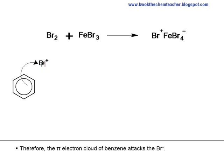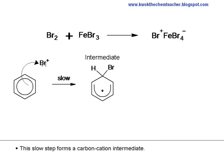Therefore, the pi electron cloud of benzene attacks the Br+. This slow step forms a carbon cation intermediate.